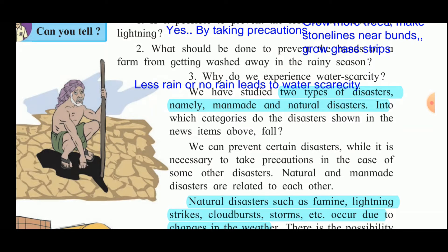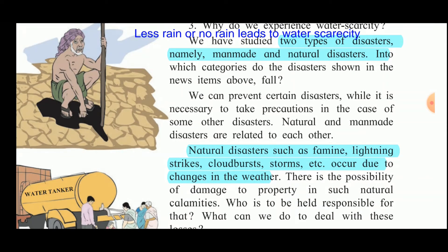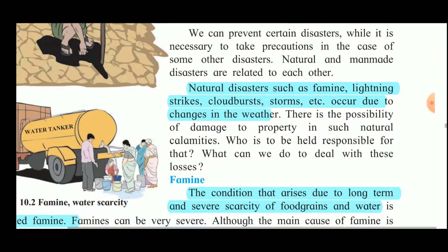Examples of natural disasters include cyclone, heavy rains, lightning, cloudburst, floods, earthquake, and volcano. Manmade disasters include accidents. Natural disasters such as famine, lightning strikes, cloudburst, and storms occur due to changes in the weather, and there is a possibility of damage to property in such natural calamities.